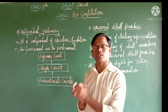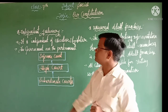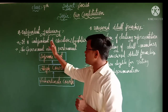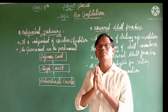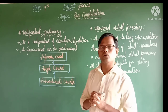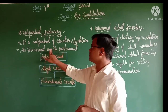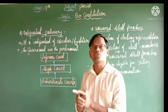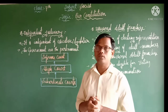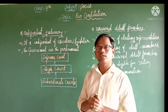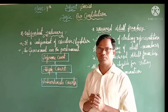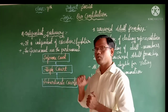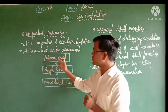The next feature is independent judiciary. The judiciary is independent of the executive as well as the legislature. The government and the parliament should not interfere in the powers and functions of the judiciary. There are three types of courts: the first is the subordinate court, the next is the High Court, and the third is the Supreme Court.